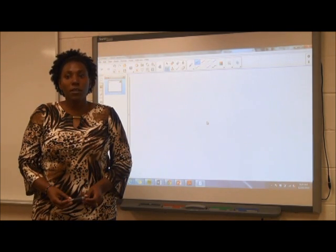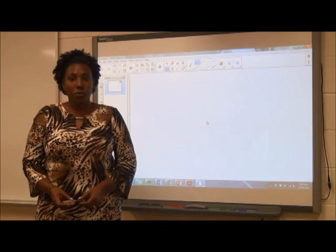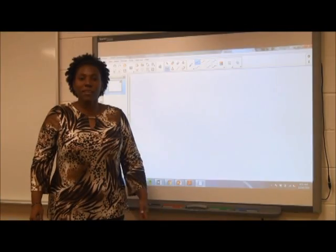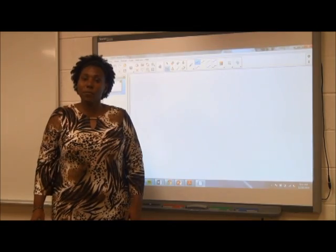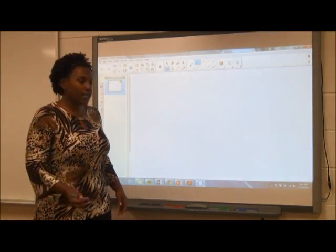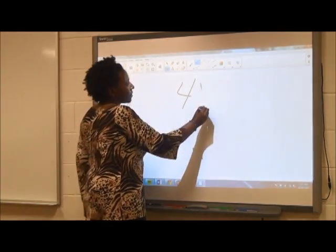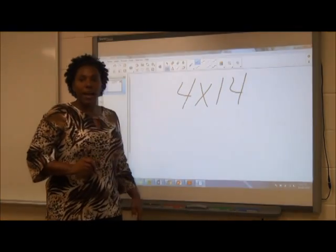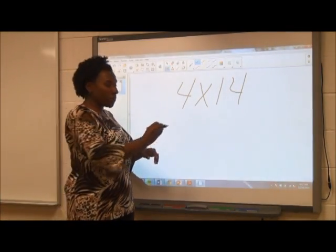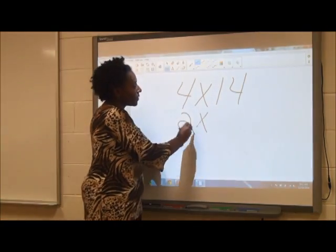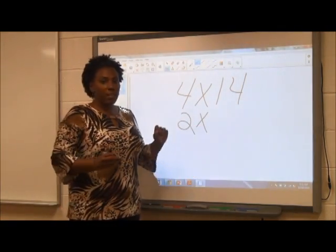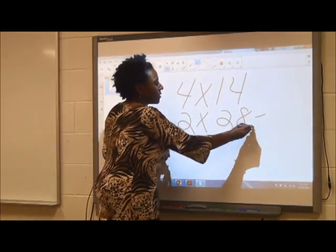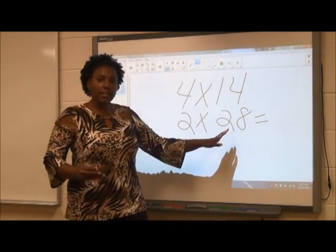When we double a number, we multiply it by 2. When we halve a number, we divide it by 2. Let's begin with a simple problem. If I multiply 4 times 14, I can first halve the 4 to make 2 and double the 14 to make 28. 2 times 28 is 56.